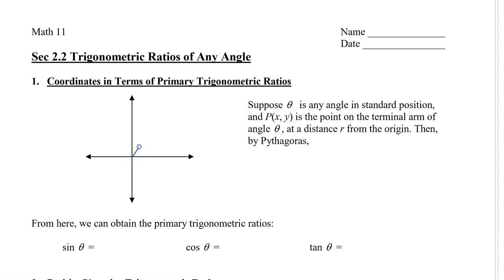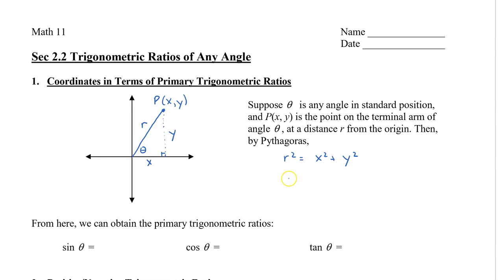So let's draw an angle theta. We have a point P(x, y), which means that this distance is going to be x, and this distance will be y. This point is at a distance r from the origin, so this will be labeled r. Then by Pythagoras, we know that r squared is equal to x squared plus y squared, and r is the square root of x squared plus y squared. A very important point is that the value r is always going to be positive — think of it as the radius of a circle, which is always a positive value.